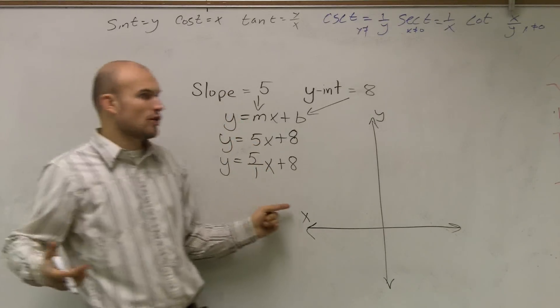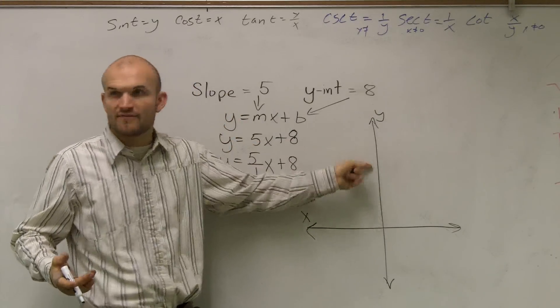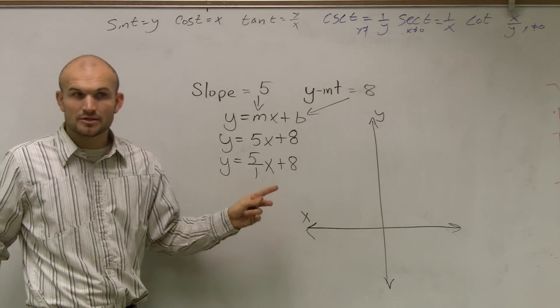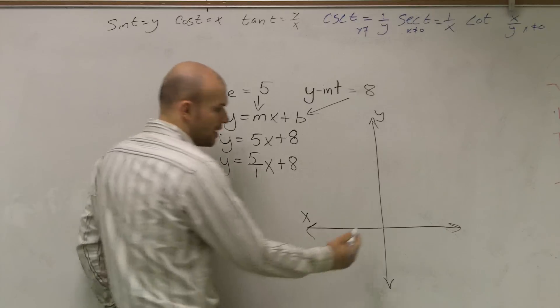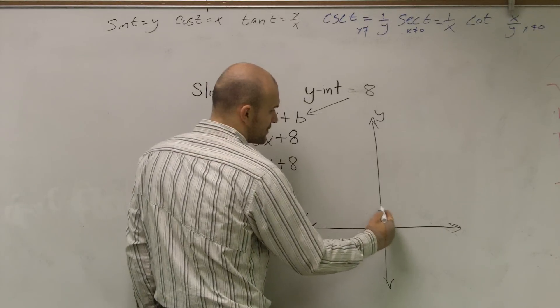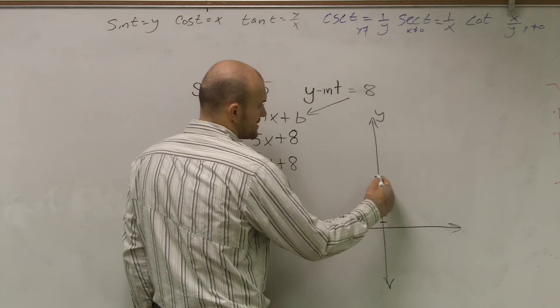You very quickly say, oh, it's where it crosses here and you found it. So if I tell you the y-intercept is 8, you need to create it. You need to go up 8: 1, 2, 3, 4, 5, 6, 7, 8.